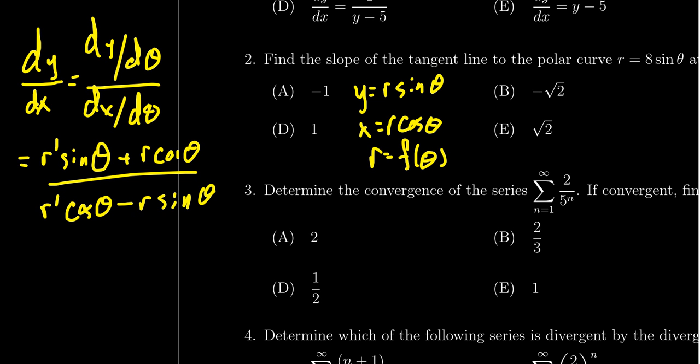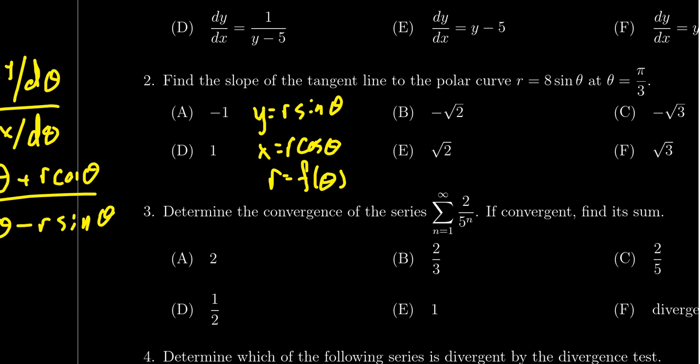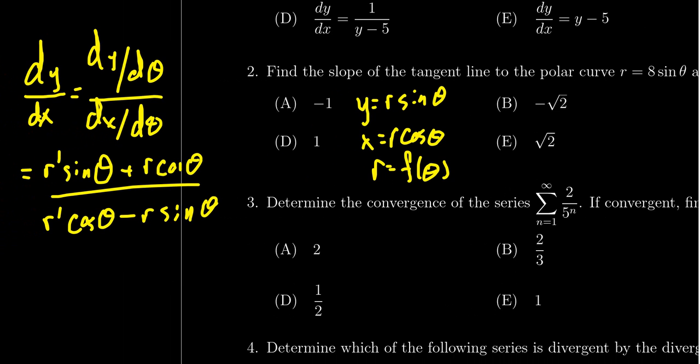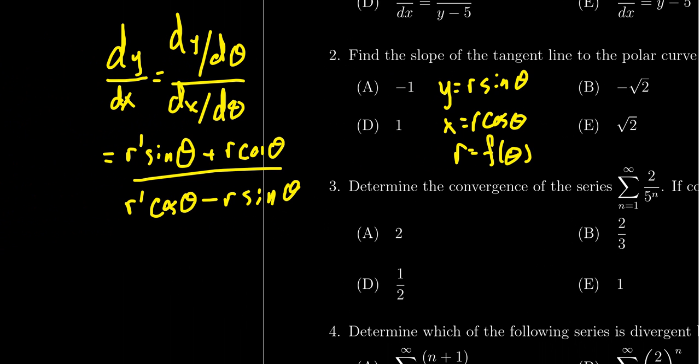And so we do know what r is. So r is 8 sine theta, so we'll plug those in in just a second. And we also want to plug in theta equals pi thirds. So let's plug in that r equals 8 sine theta. The derivative of 8 sine theta with respect to theta would be 8 cosine theta. So we get 8 cosine sine, and then we're going to get 8 sine cosine.